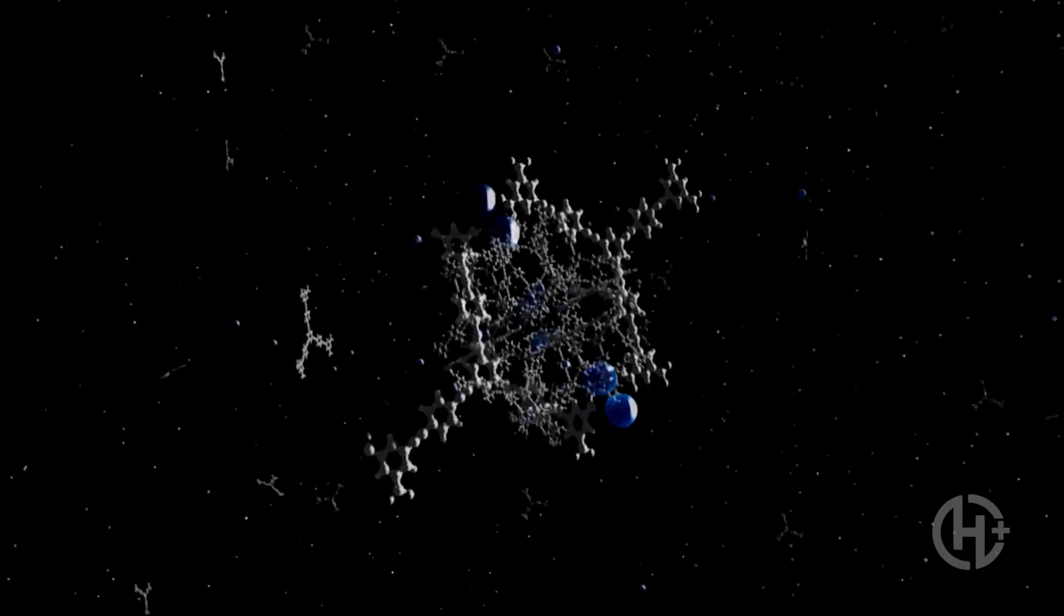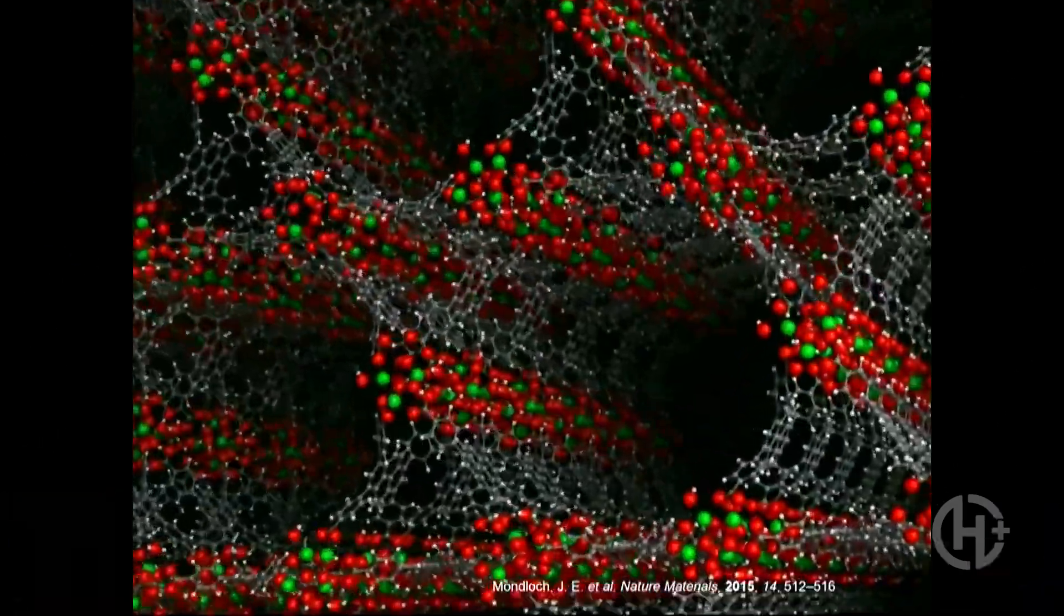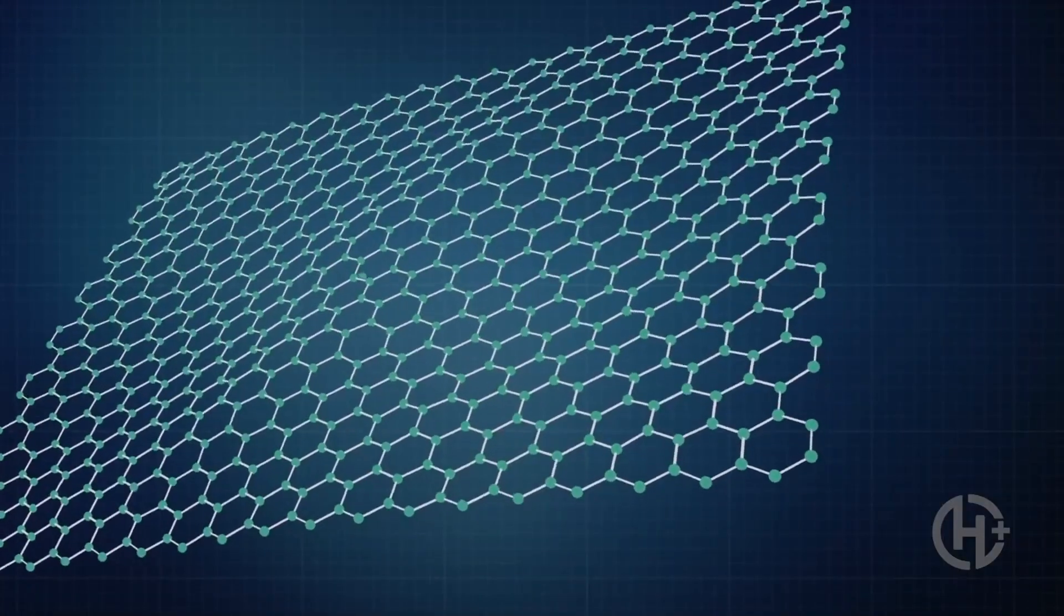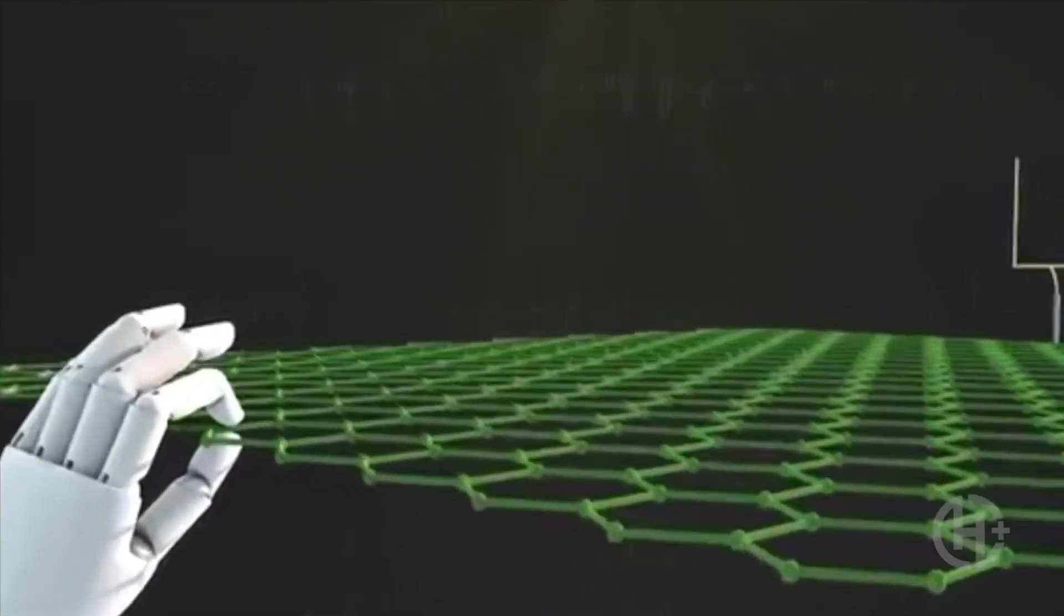But again, don't get too excited, because creating these filters won't be simple. The map is not the territory. What happens on small-scale micropatches of graphene in the lab, and a football field-sized sheet of graphene in an industrial filter plant is a world of difference.